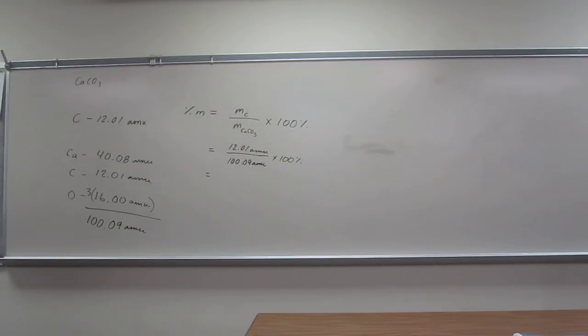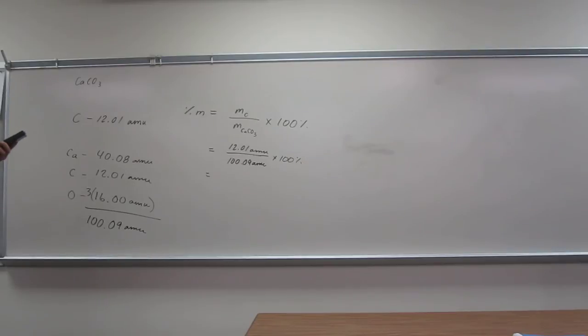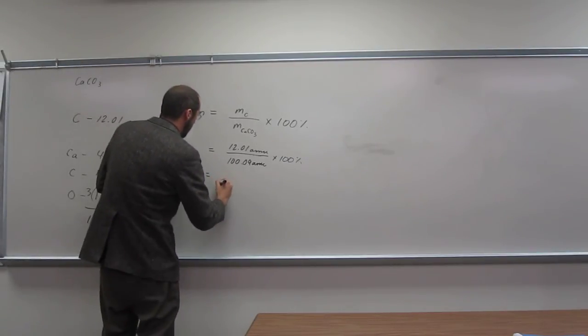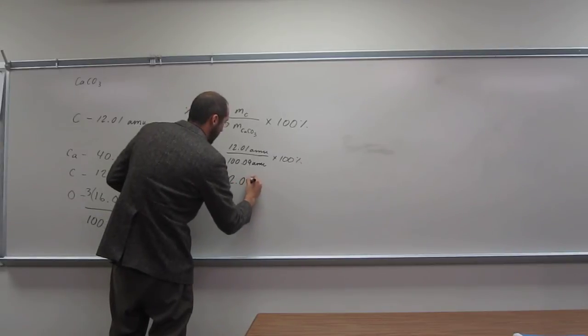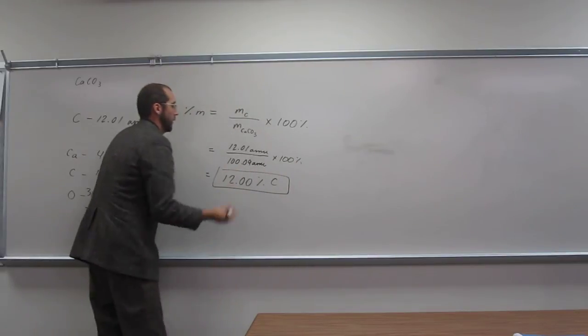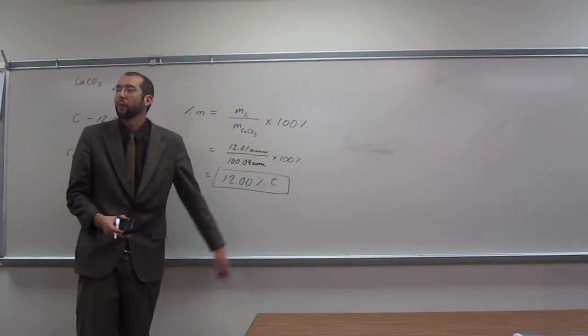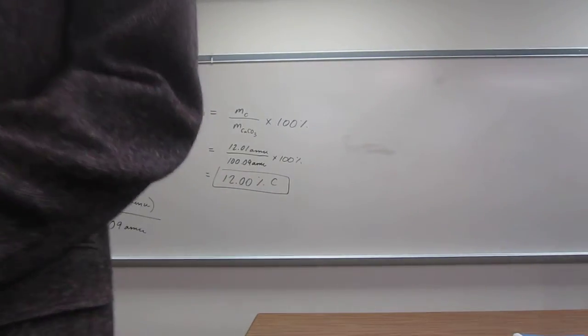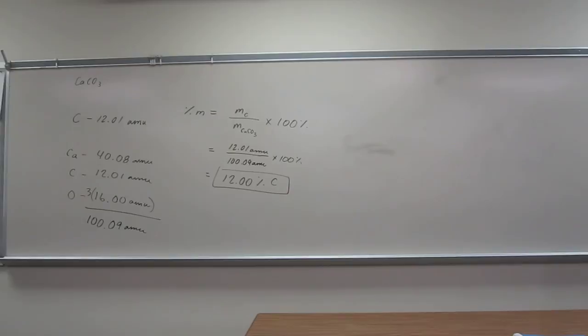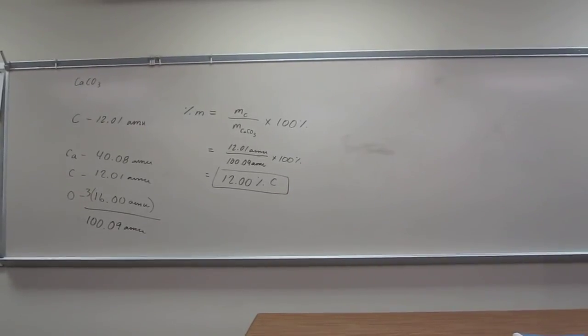So 12.01 divided by 100.09 multiplied by 100. And, well, in this case, it's going to be 12.00% carbon. You don't necessarily have to put the carbon in there, but the percentage is required, because that's your units for this answer. Is everybody okay with that? Questions?